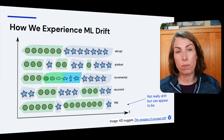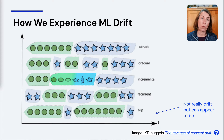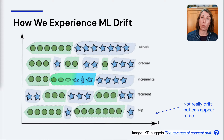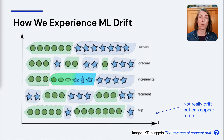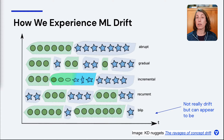How we experience drift varies quite a bit. We might experience a sudden abrupt shift — the pandemic again — where things change really quickly, and it was clear from one day or one month to the next that predictions were no longer accurate. Or maybe it's gradual or incremental changes, especially where you have a slower change, and it may not be apparent that you have a big problem for quite some time. Models often fail very silently. You might also see something recurrent — a seasonal change, a weekend change, something that happens with some frequent periodicity.